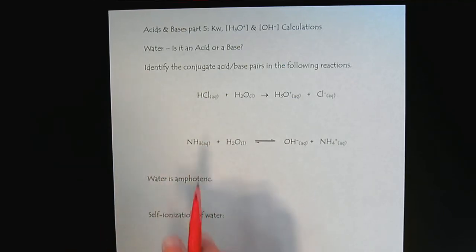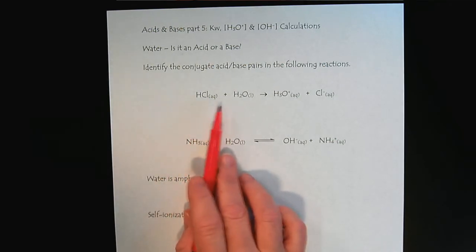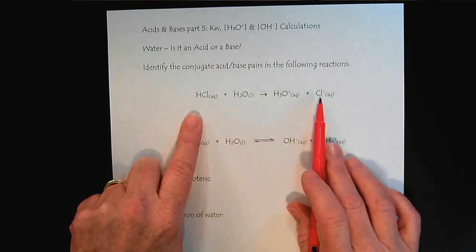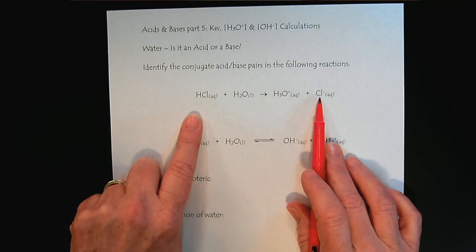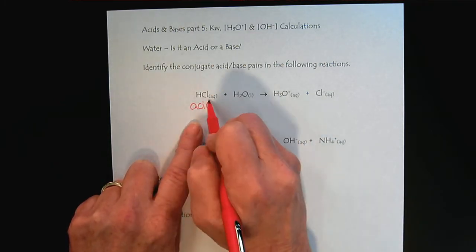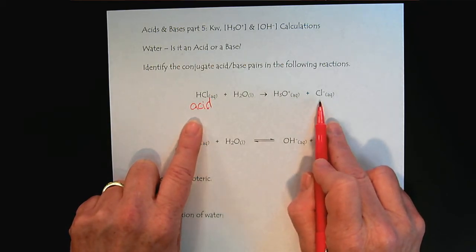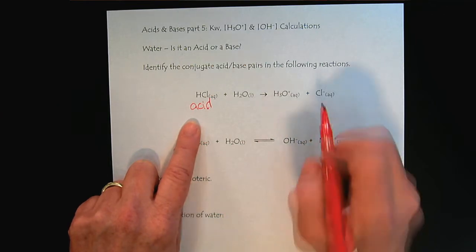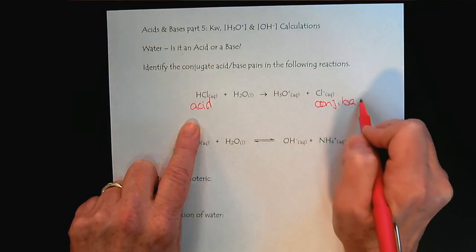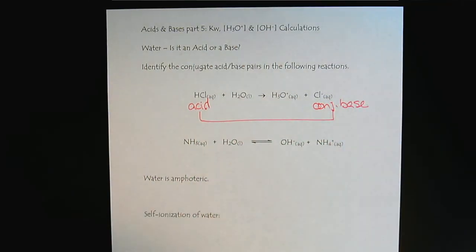So to figure out the acids and bases, we look at the reactants and we compare. And we see that the HCl lost a proton. So that would make it the acid. And then the chloride, because these two differ by reactants and products differ by one proton, we would describe the chloride as the conjugate base. So this would be our first conjugate acid-base pair.